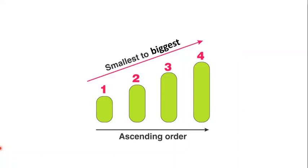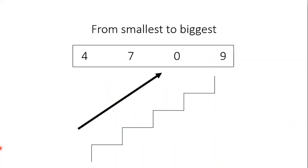Let's practice some examples. You can see four numbers on your screen. These are 4, 7, 0, and 9. Can you please tell me which number is the smallest? Yes, 0 is the smallest. Now let's write 0 here on the first step. Now see the rest of the three numbers: 4, 7, and 9. Which number is smallest? 4.